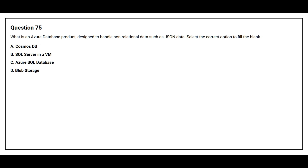Question number 75. What is an Azure database product designed to handle non-relational data such as JSON data? Select the correct option to fill the blank. Option A: Cosmos DB. Option B: SQL Server in a VM. Option C: Azure SQL Database. Option D: Blob Storage.